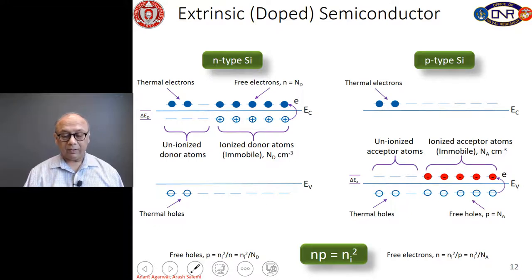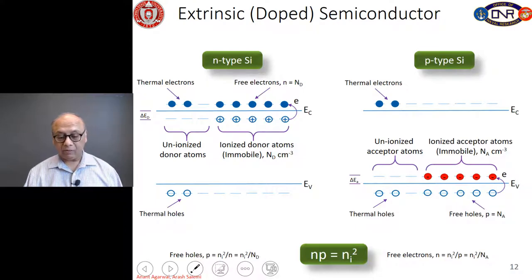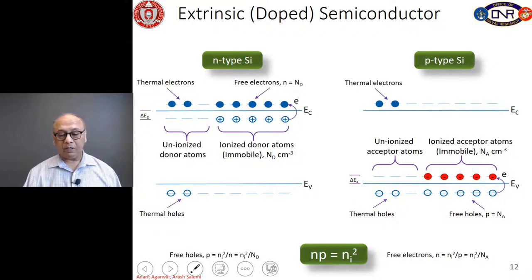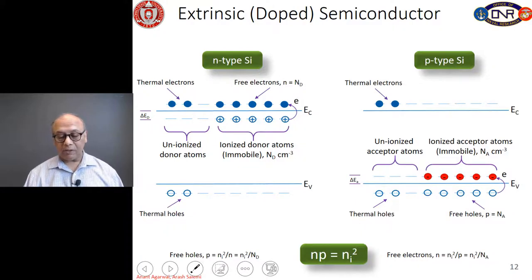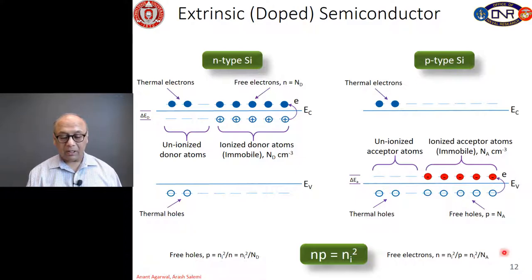Good morning everyone. This is the third lecture in this series. My name is Anant Agarwal and my colleague Dr. Arash Salami has helped me prepare this lecture. Last time we talked about intrinsic semiconductors and doping the semiconductor with n-type or p-type to increase the number of electrons in the conduction band or number of free holes in the valence band. We decided that n times p always equals n_i squared, whether it is an intrinsic, n-type, or p-type material.